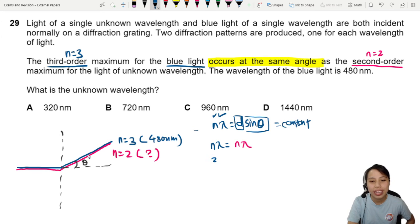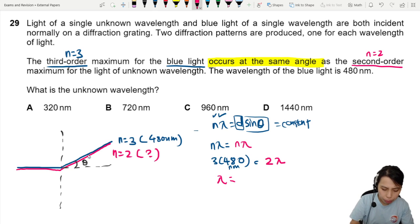So if you submit all the values, you will get that this one is 3 and I'm going to keep this in nanometers so that I get my answer in nanometers. And then the ratio of the other one will be 2 times the mysterious wavelength lambda. In the end, we'll get a wavelength of 720 nanometers.